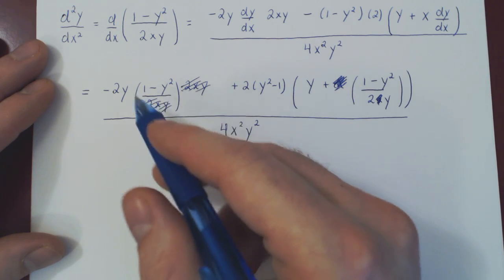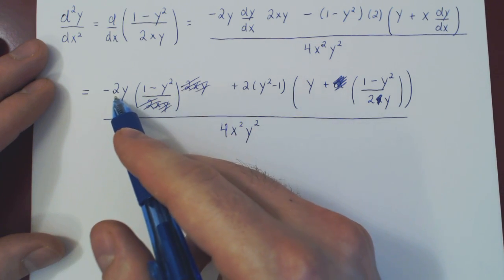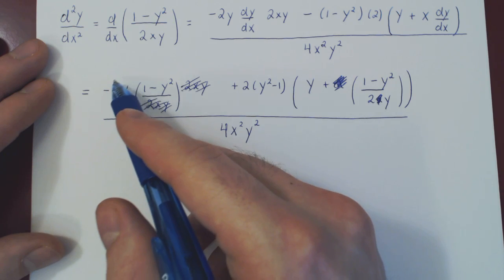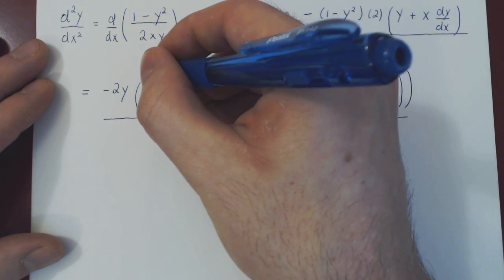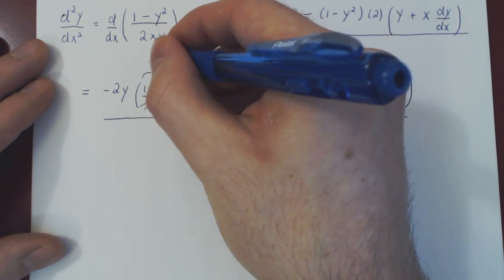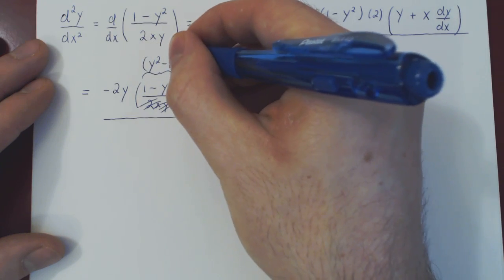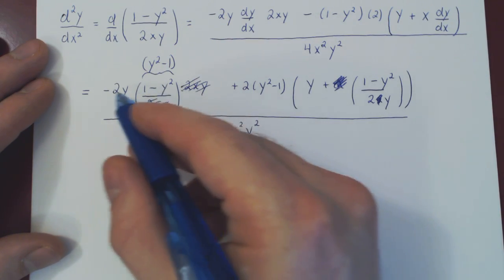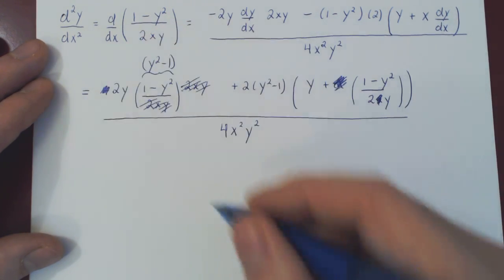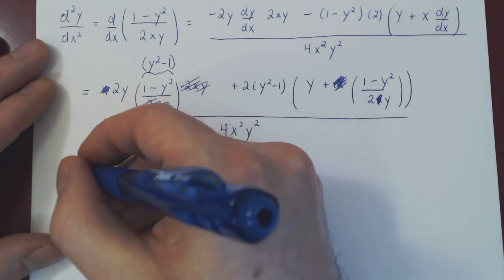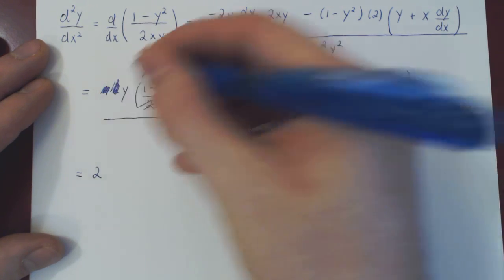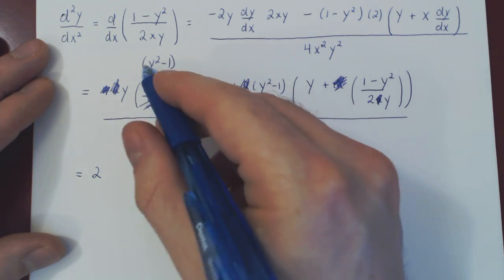Notice there's a factor of 2 in both terms, and we have (1 minus y²) here and (y² minus 1) there. Bringing in the negative makes this term become (y² minus 1). Now we have two common factors: factor out the 2, which is gone from both terms, and factor out (y² minus 1).